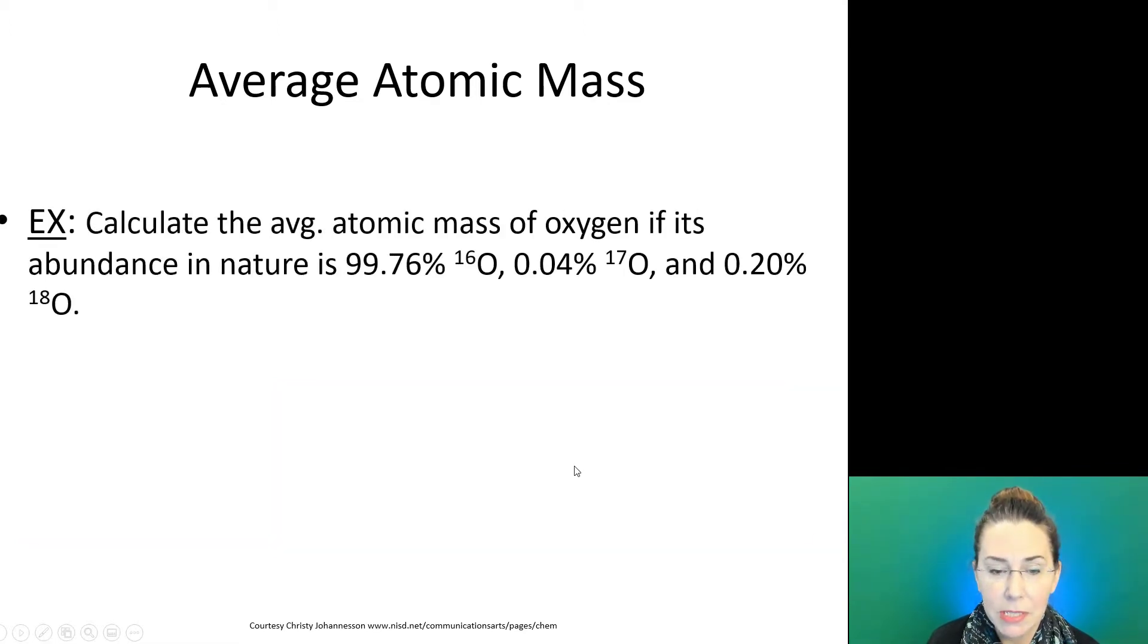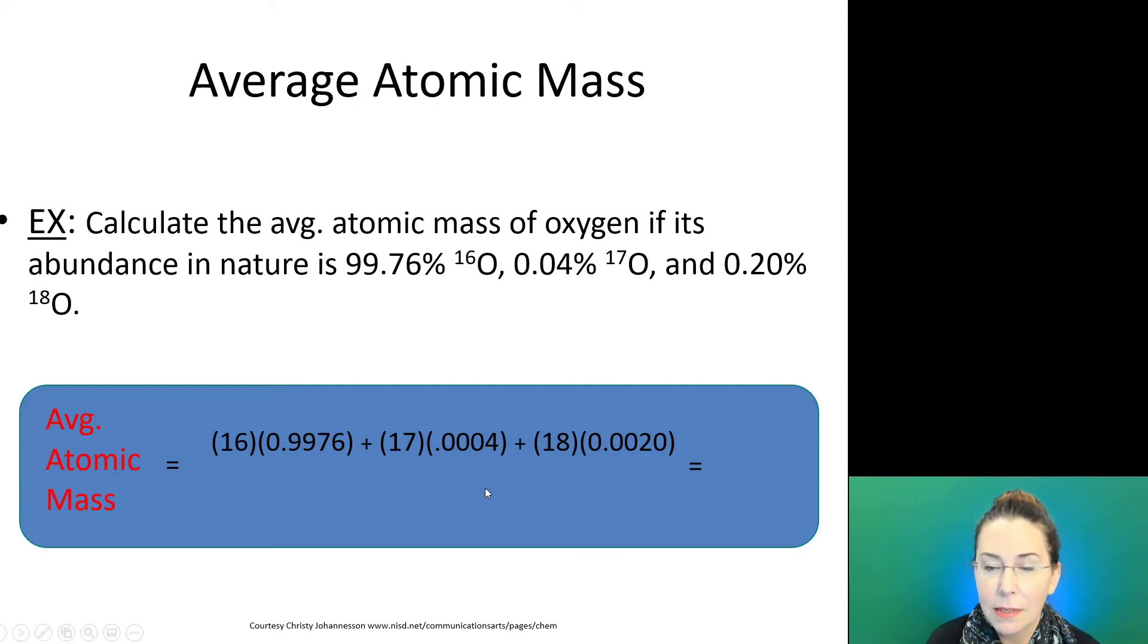I will convert those percent abundances into decimals because whenever we work with a percentage, remember it's a part of a hundred, and essentially we're taking that percentage and dividing it by 100 by moving our decimal two spots to the left. So I would be taking 16 times 0.9976, add that result to 17 times 0.0004, and add those two results to 18 times 0.0020 to arrive at my average atomic mass.